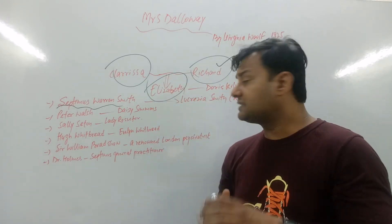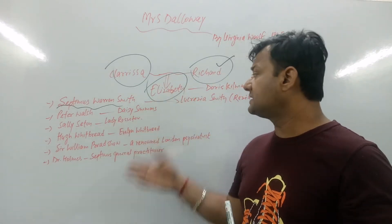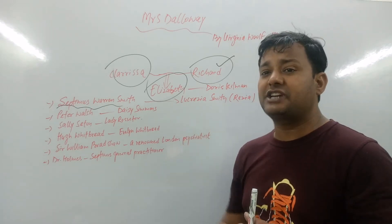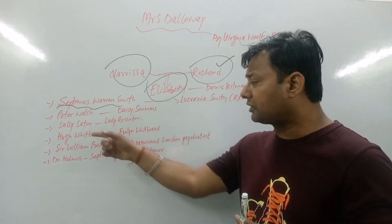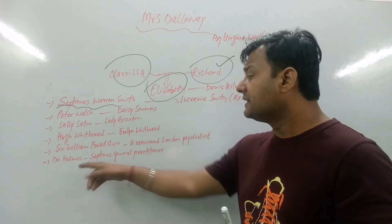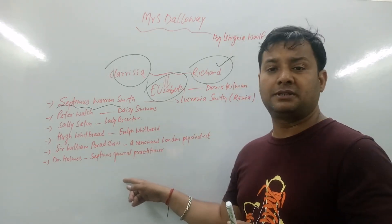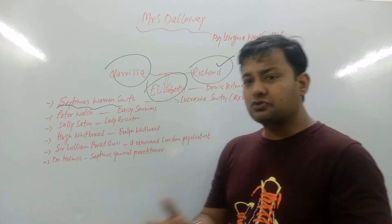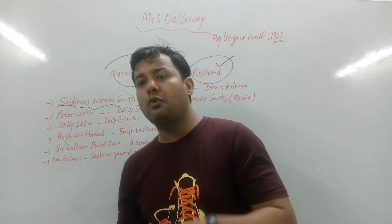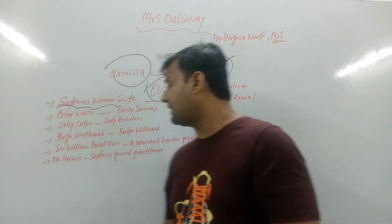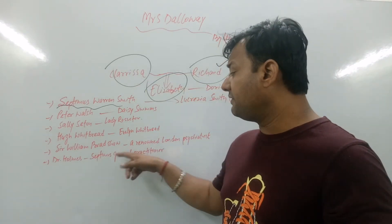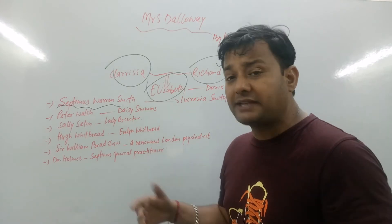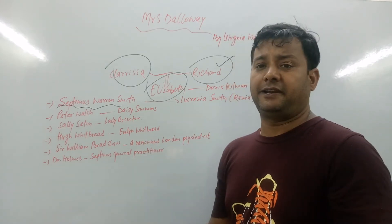And his wife — definitely his wife — Lucrezia Smith, Rezia, approached a doctor. Exactly — Doctor Holmes, a general practitioner. He referred them on to Sir William Bradshaw, who is a renowned psychiatrist. Sir William imposed his own will and said the patient needs to be put in a mental asylum — he will be fine there.